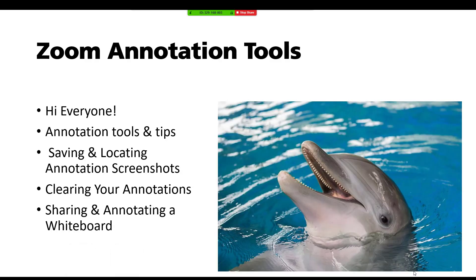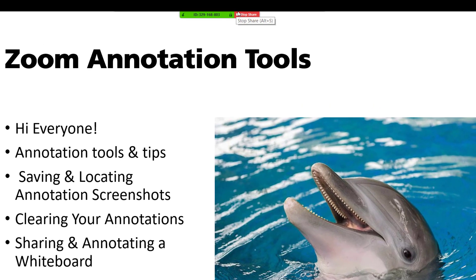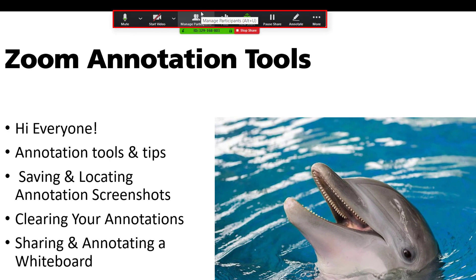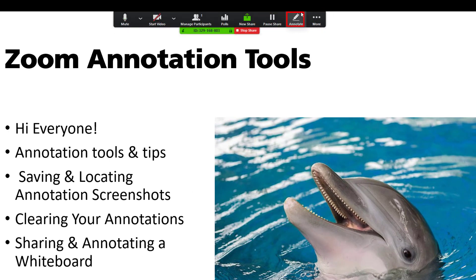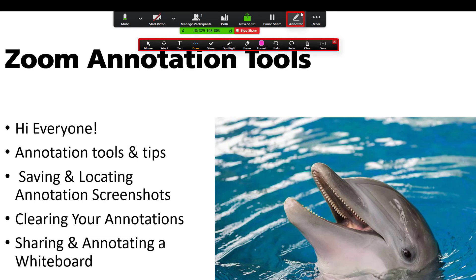Let's say we want to annotate or highlight some information that's on our slide. What we're going to do is access the toolbar that has now been moved to the top of the screen because we're sharing, and push our mouse up there for the toolbar to pop down. We're going to click Annotate. Once we click Annotate, you'll see that a new dropdown appears with a bunch of annotation tools on it.